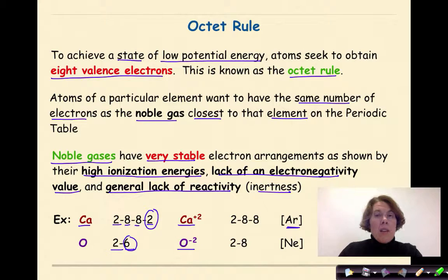And now has an electron configuration of 2-8, which matches that of neon. So we can see in both of these elements, they're either trying to lose electrons or gain electrons to have an electron configuration closest to the nearest noble gas, and we're going to see that trend over and over again as we continue our study of bonding.